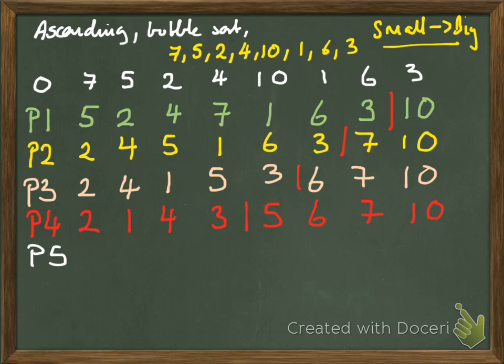Pass 5. 2 and 1, swap. 2 and 4, okay. 4 and 3, swap. 4 and 5, okay. 5 and 6, okay. 6 and 7, okay. 7 and 10, there we go. So 1, 2, 3, 4, 5, 6, 7, and 10. That wasn't the most inspiring set of numbers. But be careful here. It's in the right order, but we had swaps. So I have to go into pass 6.